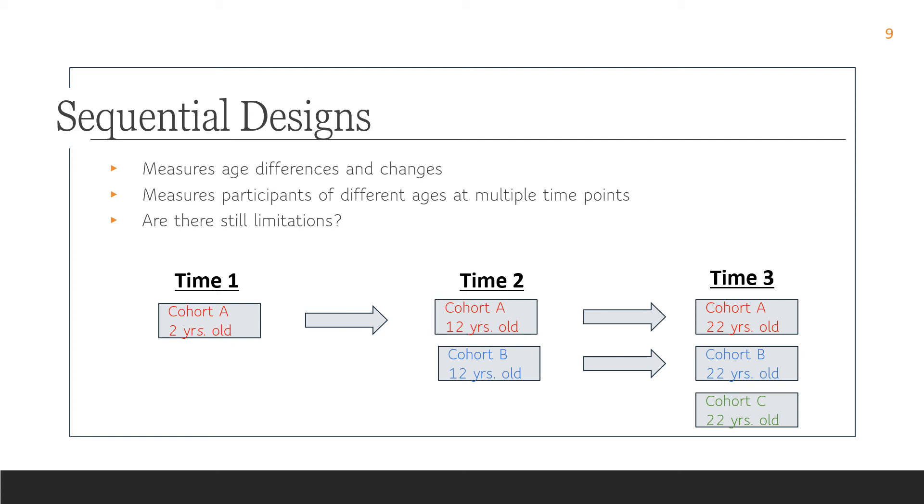But a limitation of this type of study is that it is very time-consuming. So let's say it takes 20 years, and I have 100 people in each study, or in each group. Now I have 300 people. That's also going to cost me a lot of money.